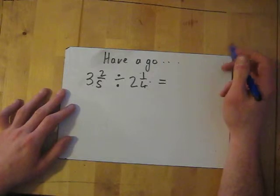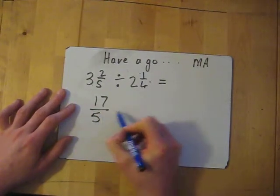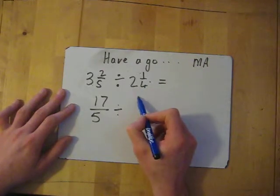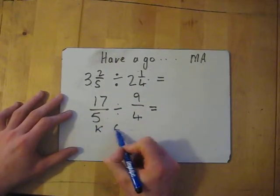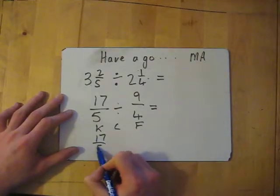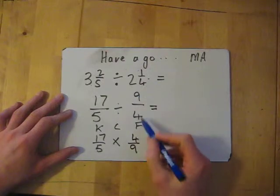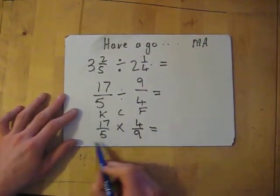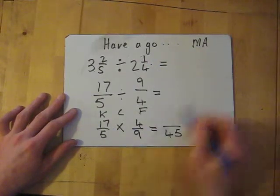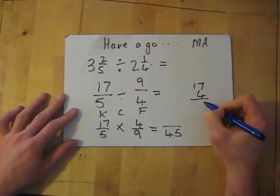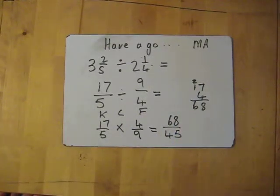Let's go through the answers. Remember MA — multiply and add: 3 times 5 is 15, add 2 is 17 over 5. Divided by: 2 times 4 is 8, add 1 is 9 over 4. Now KCF: keep 17 over 5 the same, change divide to multiply, and flip — the 4 goes to the top, the 9 goes to the bottom. Then multiply: 4 times 17 — let's do a quick multiplication: 4 times 7 is 28, carry the 2, 4 times 1 is 4, add 2 is 6, giving 68 — over 5 times 9 which is 45. So the answer is 68 over 45. Done.